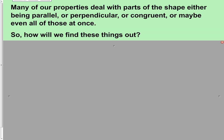Many of the properties we've been talking about deal with parts of the shape either being parallel, perpendicular, or congruent — or maybe even all of these at once. That's actually a benefit, because there aren't so many things we have to look for. It's a limited number of things. We just have to apply those things to the particular types of shapes we have, since a lot of properties are based on line segment lengths being congruent, lines being parallel, or lines being perpendicular.